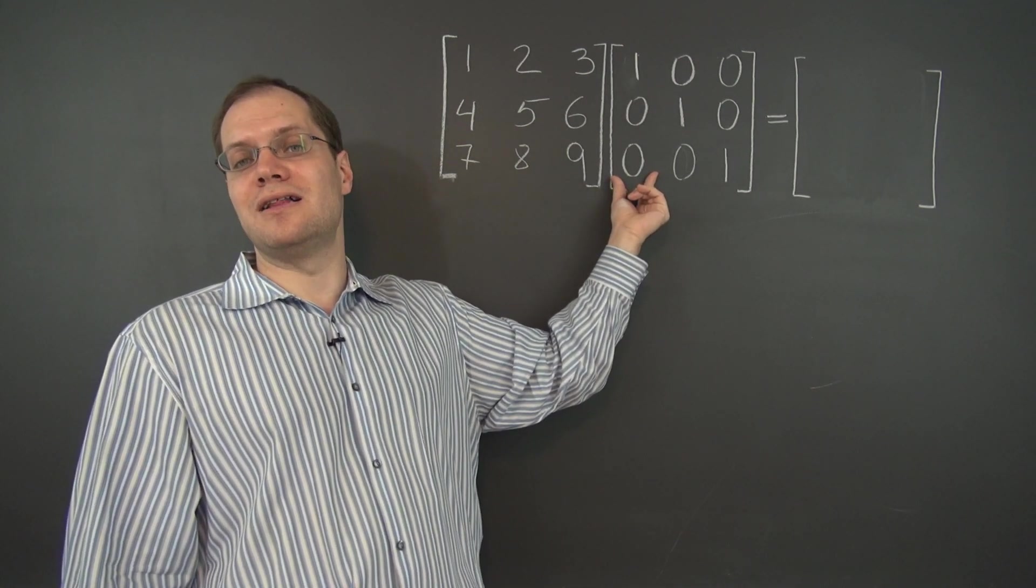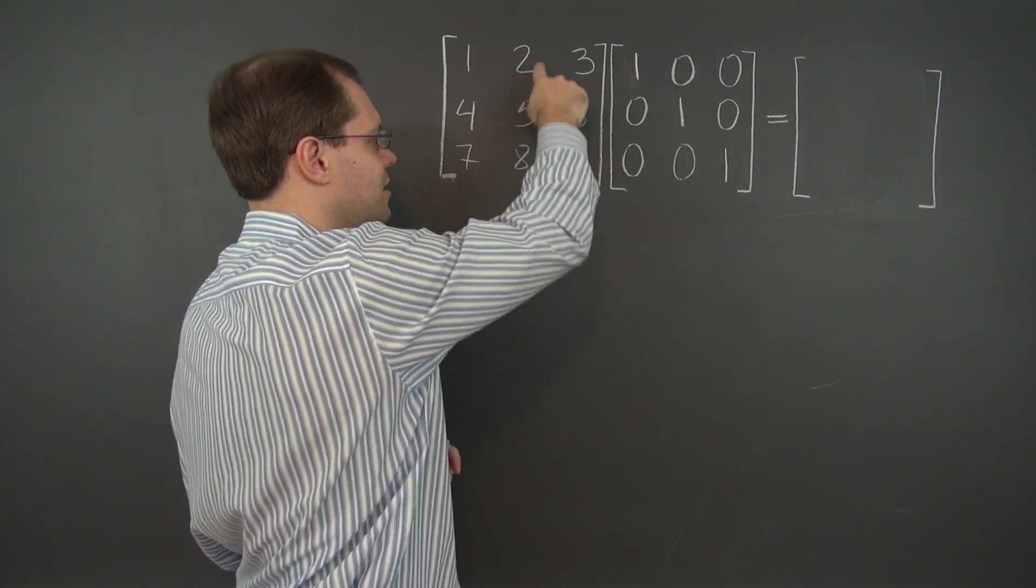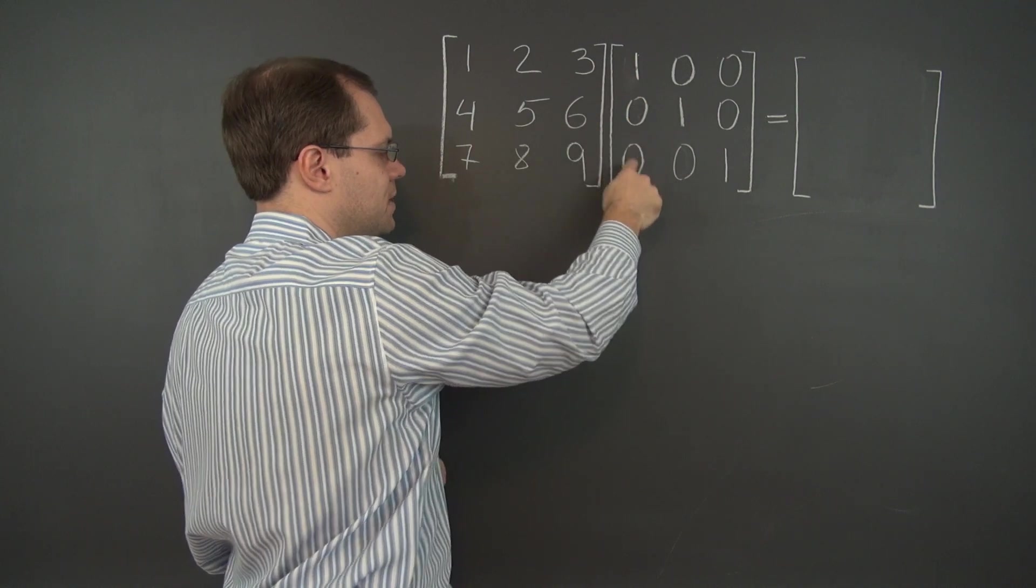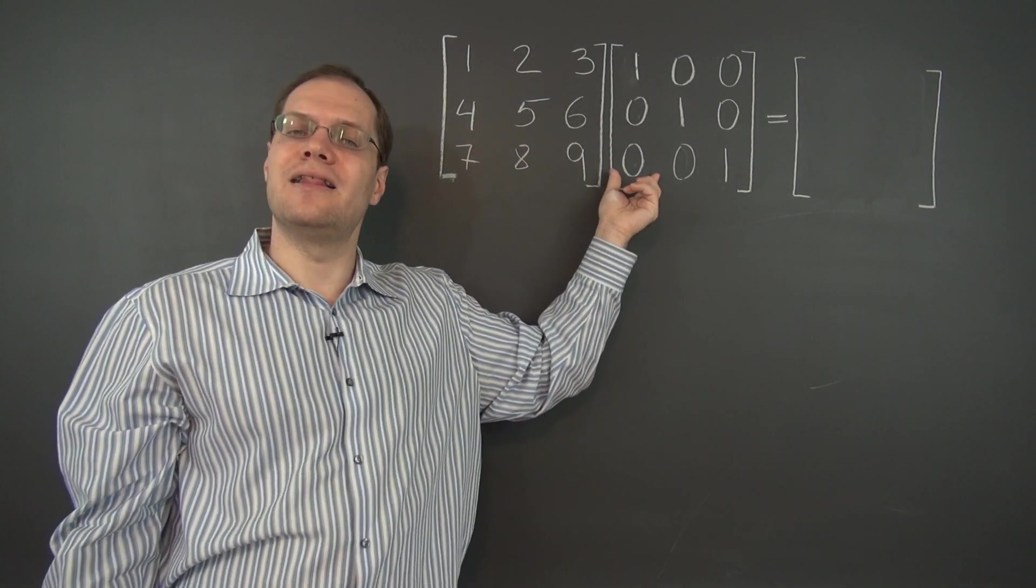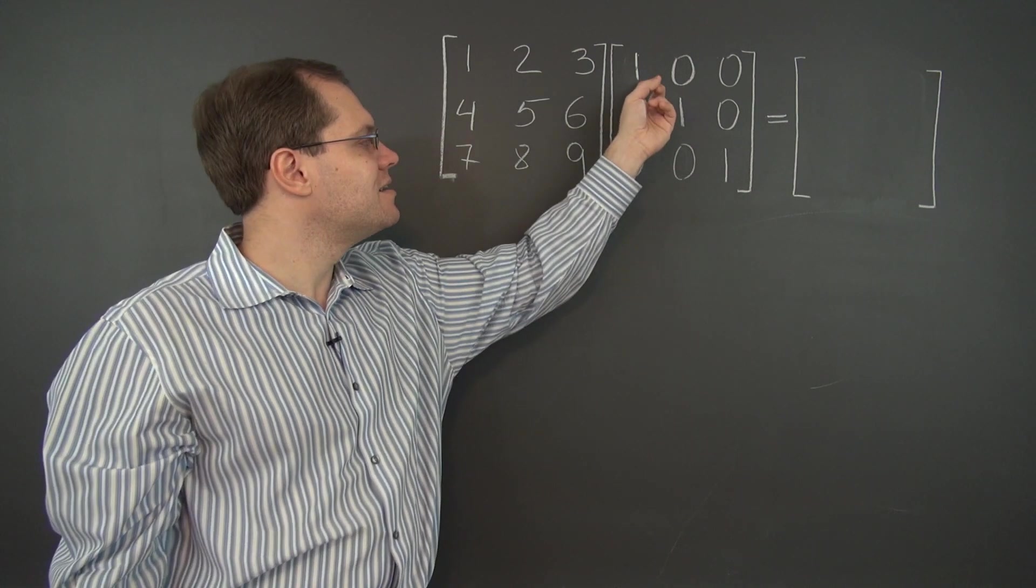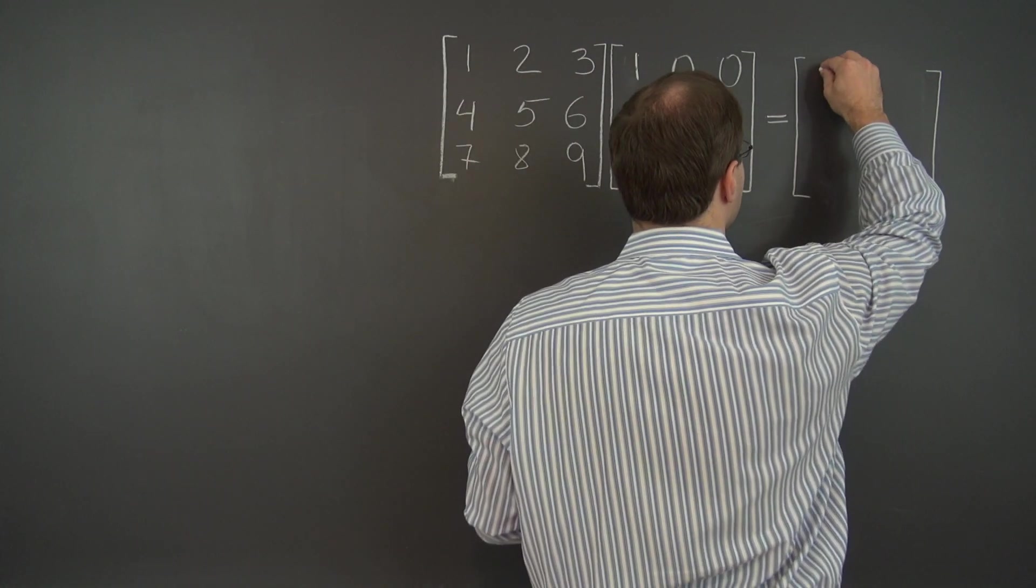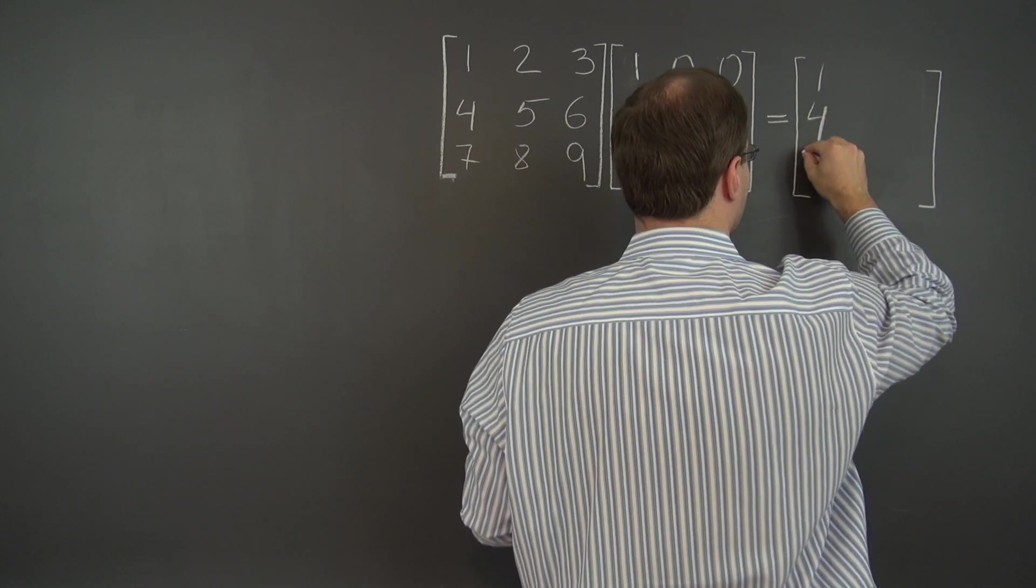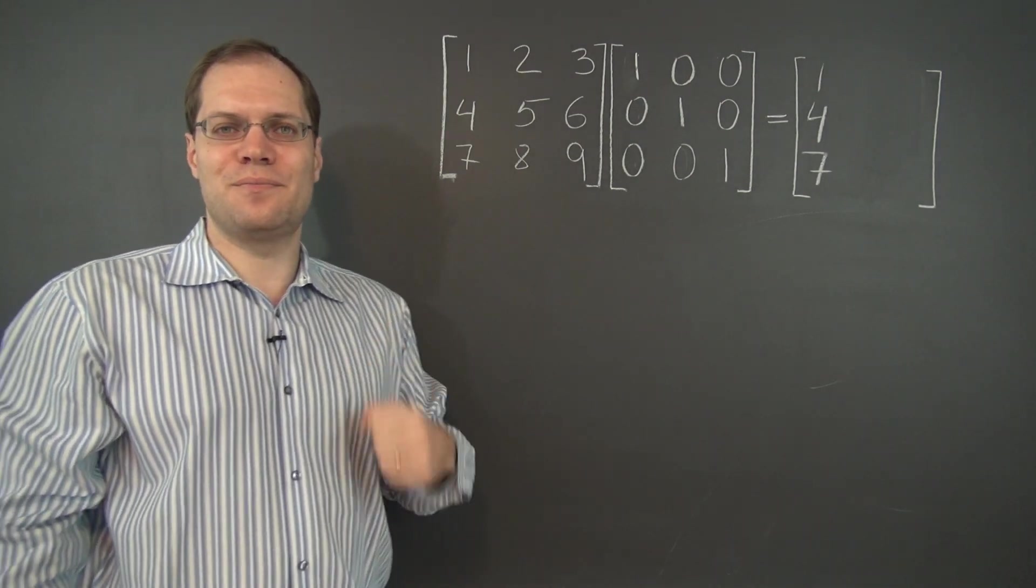So for the first column of the answer, we have to take one of the first column, none of the second, none of the third, paying attention to these coefficients. This, of course, is the column picker, and it's the first column picker. So the first column of the answer is 147, and you can see identity at work. It's column by column, leaving the matrix unchanged.